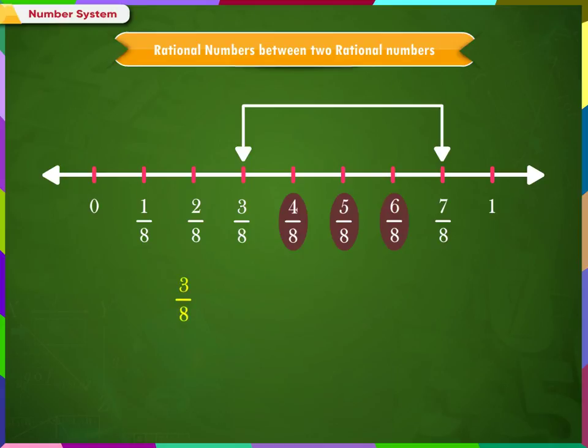3/8 can be written as 30/80 by multiplying numerator and denominator by 10. So, 7/8 can also be written as 70/80.